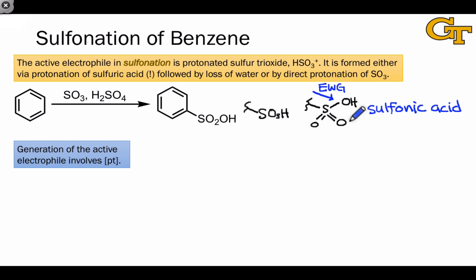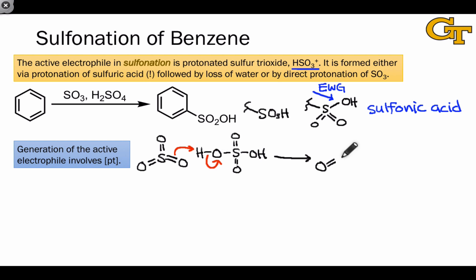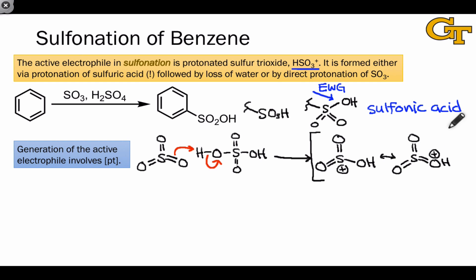The active electrophile in sulfonation of benzene is protonated sulfur trioxide — HSO3 with a positive charge. Generation of the active electrophile simply involves protonation of sulfur trioxide. Here's a Lewis structure for SO3, which is already quite a Lewis acidic species with three highly polarized sulfur-oxygen double bonds. To make the reaction proceed, SO3 is dissolved in highly concentrated sulfuric acid, which is capable of protonating it. In one resonance structure of the resulting species, sulfur contains a positive charge; in another, all three S=O double bonds are intact and the positive charge resides on oxygen. The first form nicely shows the electrophilic nature of the sulfur atom, which is key to forming the carbon-sulfur bond in electrophilic aromatic substitution.